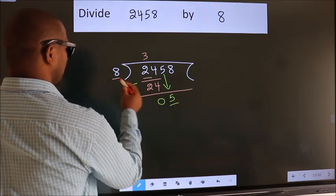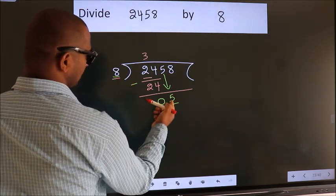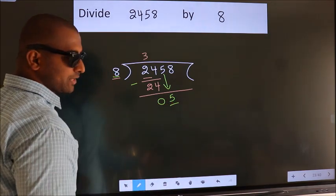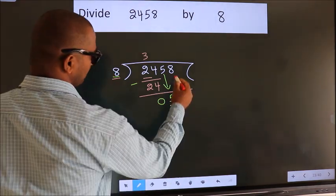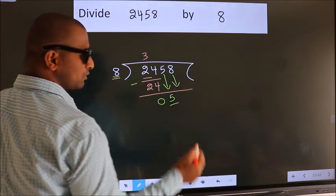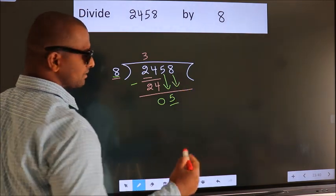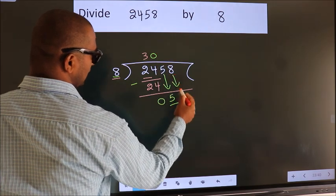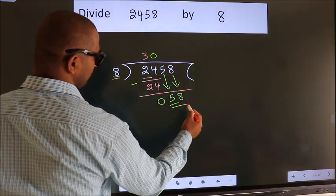Here we have 5. Here 8. 5 is smaller than 8. So we should bring down the second number. And the rule to bring down the second number is put 0 here. Then only we can bring down this number. So 58.